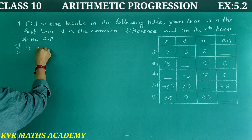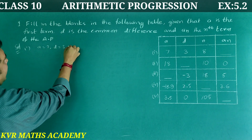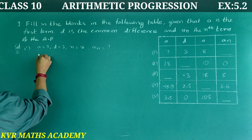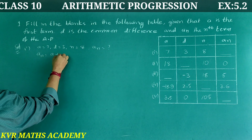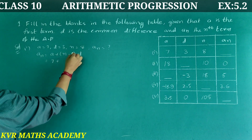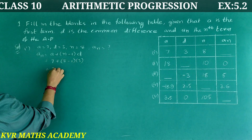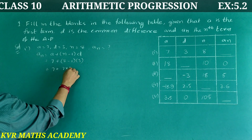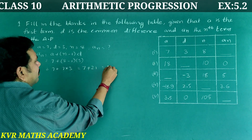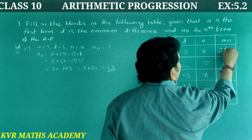First one: A = 7, D = 3, N = 8, find A-N. Using the formula, A-N = A + (N − 1) × D = 7 + (8 − 1) × 3 = 7 + 7 × 3 = 7 + 21 = 28. So A-N = 28.